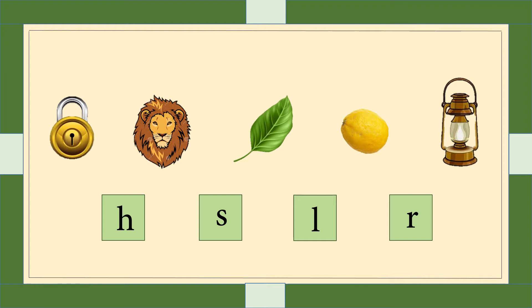So let's read the letters. First letter is H, second letter is S, third letter is L, and last letter is R. Since all the picture names begin with the 'L' sound, now we will make a circle around the letter L.